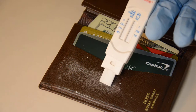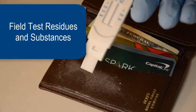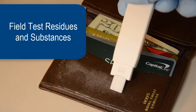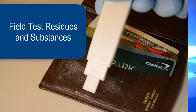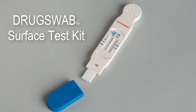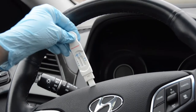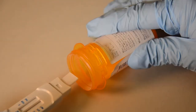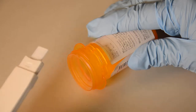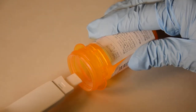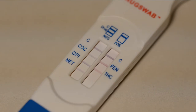But now there is a new and reliable way to field test residues and substances for the presence of deadly fentanyl and other drugs, alerting first responders to the presence of fentanyl and to take any necessary precautions. The new drug swab surface test kit is the first and only fentanyl drug test kit that provides first responders and investigators with a fast and safe method for field testing of suspicious and potentially dangerous residues or substances.